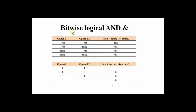For bitwise AND: if both operands are true, the result is true. If one operand is true and the second is false, the result is false. Both conditions must be true; if one condition is false, the result is false. In binary: one AND one gives one, while all other combinations give zero.